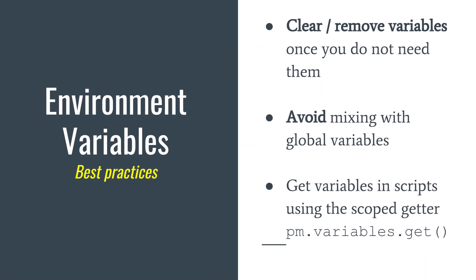I'd advise removing any variables you don't need as soon as you no longer need them. Also avoid mixing environment variables with global variables. If you're moving away from the global space, stick to environment variables consistently — mixing one global and one environment variable makes your scripts look inconsistent. Environment variables are something you should generally use a lot, and the same recommendation applies: use the scoped getter pm.variables.get in your scripts.